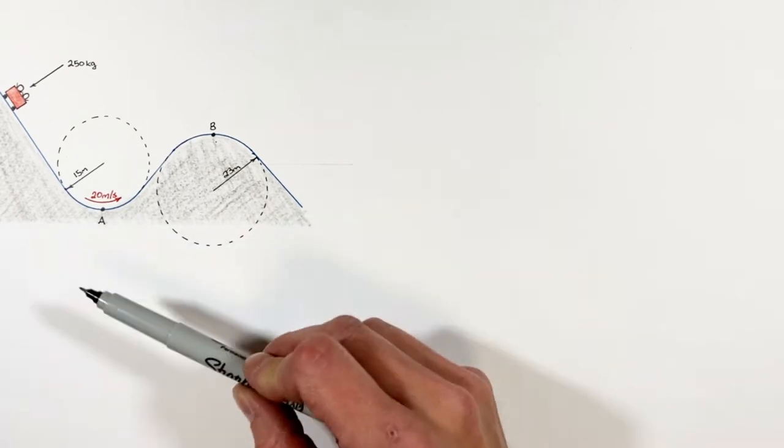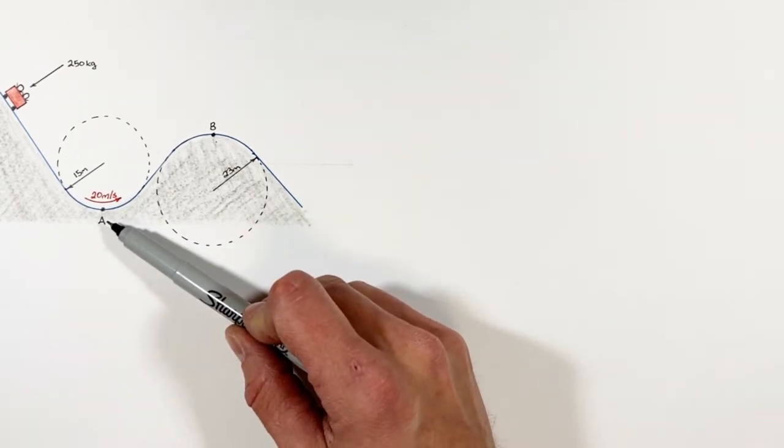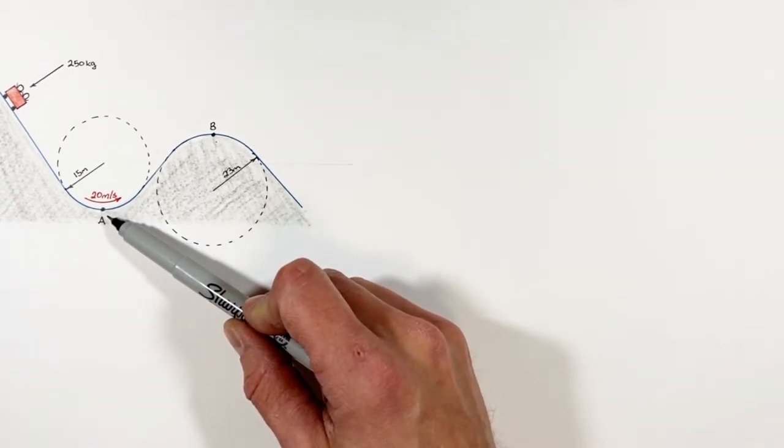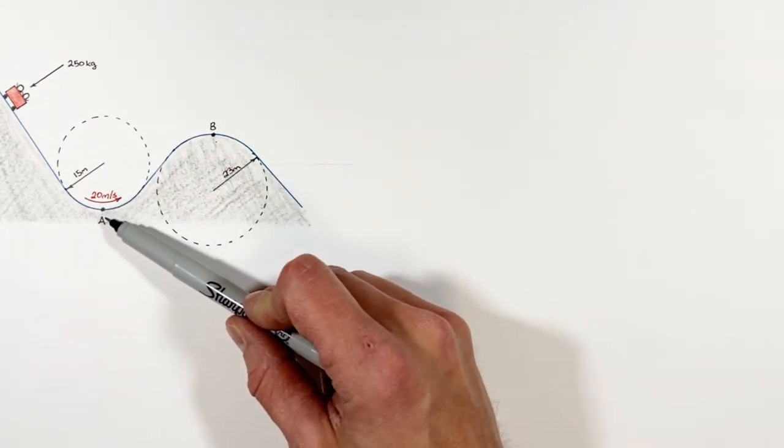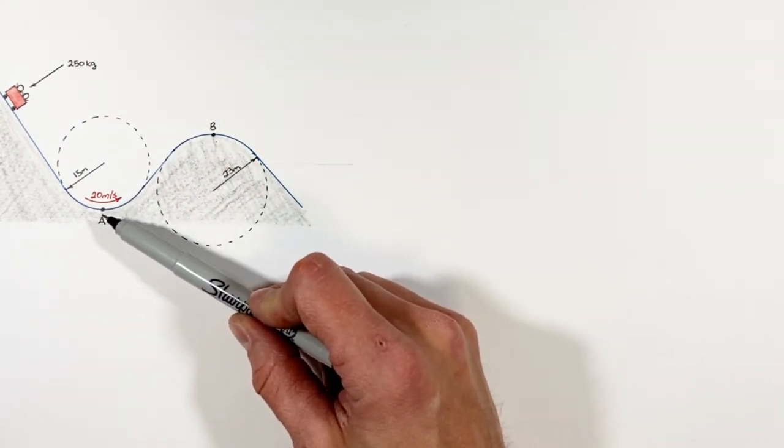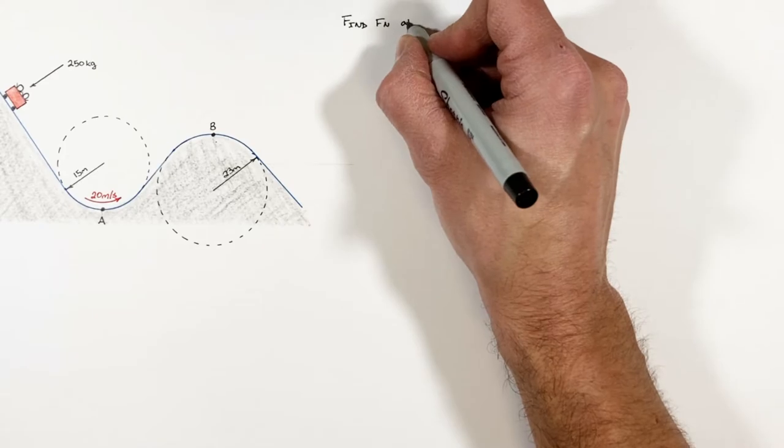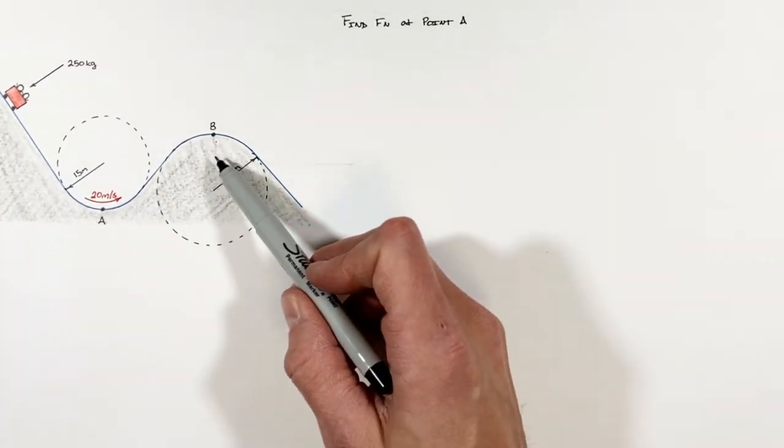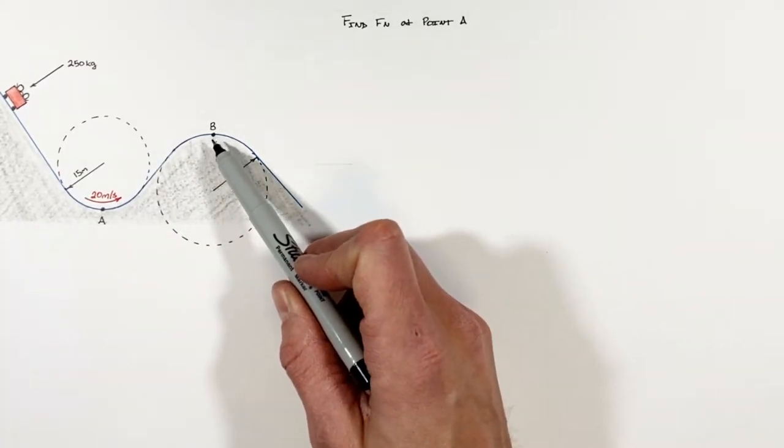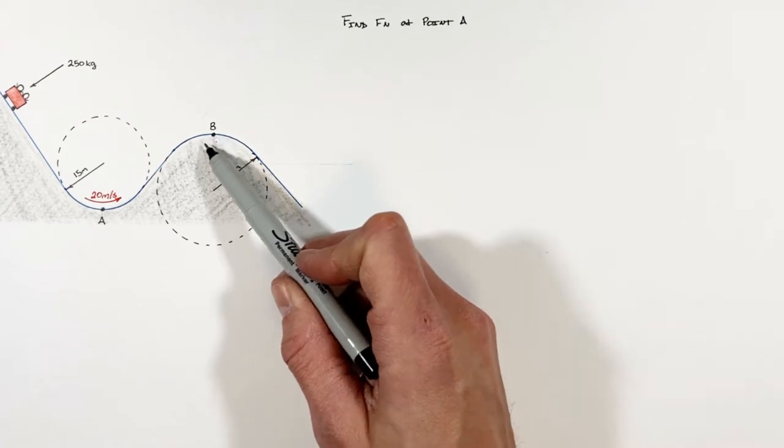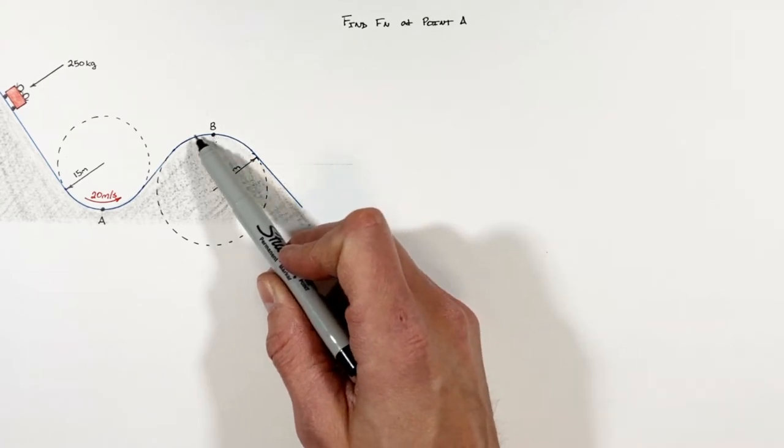What I want to do in this problem is solve for two things. The first thing I want to do is solve for the normal force between the cart and the track as this cart passes point A. Then we're going to solve for the maximum speed which the cart can be traveling at B so that it remains in contact with the track.